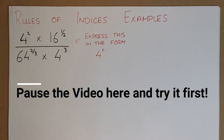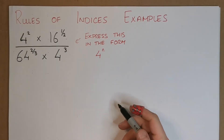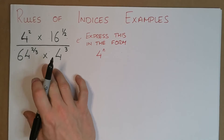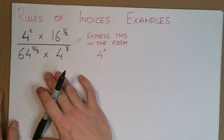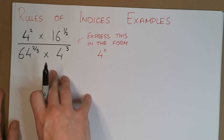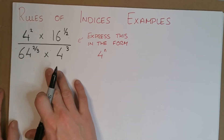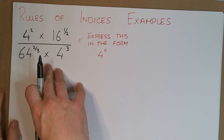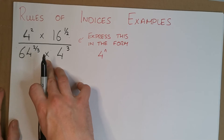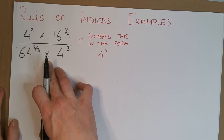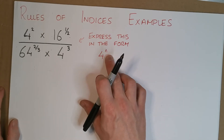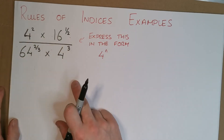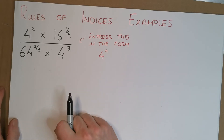So this is a leaving cert example question for indices. I always say this one is tough — it's definitely tricky, and at ordinary level it would be considered hard, but at higher level it should be straightforward enough. I absolutely love doing these — they're kind of a bit fun. We have to express this in the form 4 to the n, so those of you thinking you'll just use your calculator — no, unfortunately we can't do that.